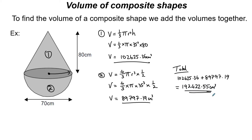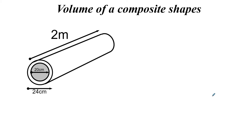If there were three shapes joined together you'd find each individual volume and add all three together. Now let's look at a cylinder with another cylinder cut out from the middle — like a tube or a kitchen roll. We have an outer (larger) cylinder and an inner (smaller) cylinder cut through the middle.